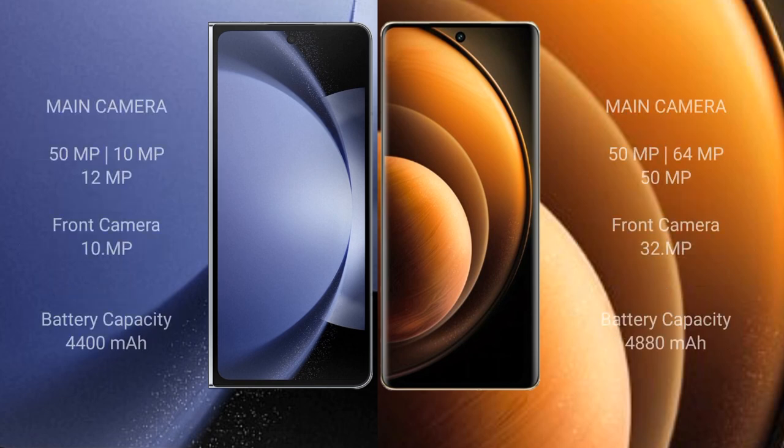The Samsung Galaxy Z Fold 6 features a rear triple camera setup: 50MP plus 10MP plus 12MP, and a 10MP front camera. The Vivo X100 also has a rear triple camera setup: 50MP plus 64MP plus 50MP, and a 32MP front camera.